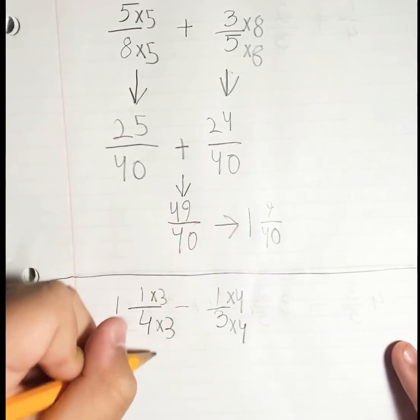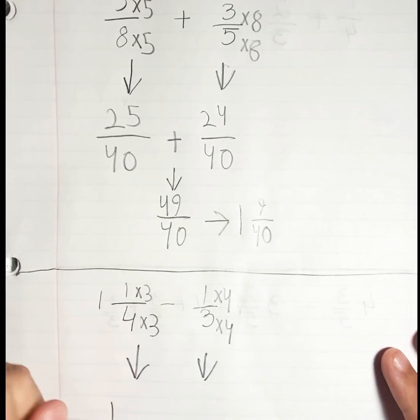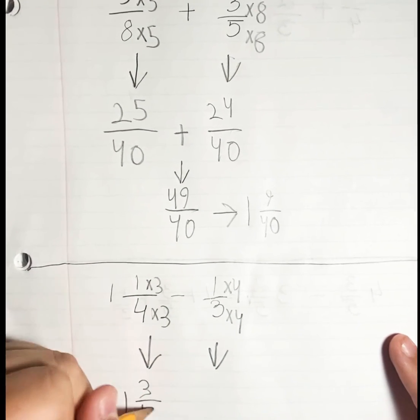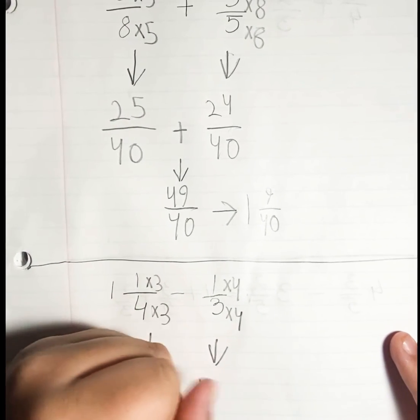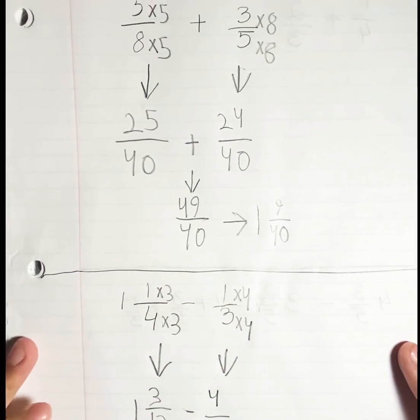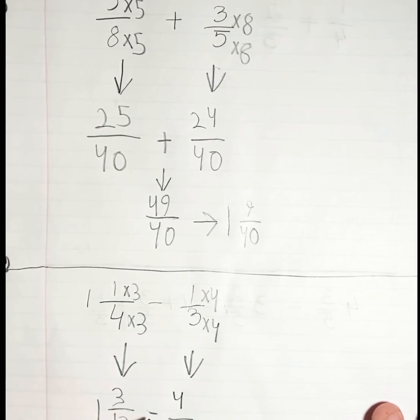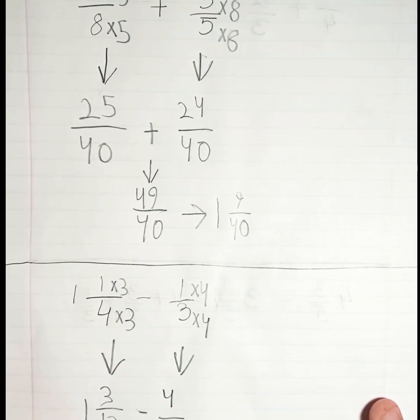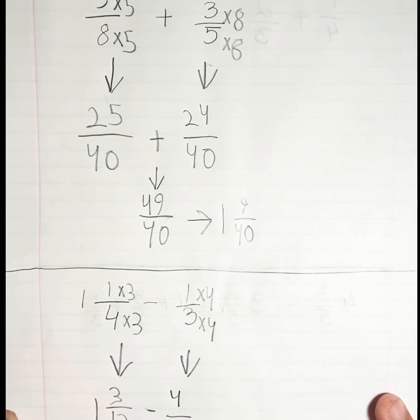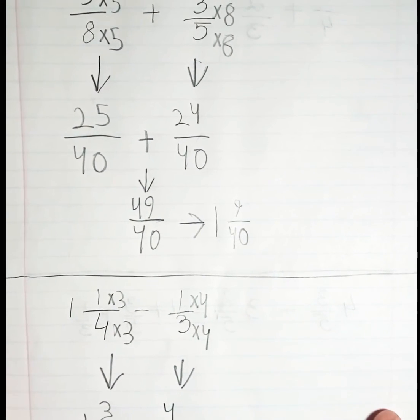Now bring these down. So we bring down the 1 and then 3/12 subtract 4/12. We can see that 3/12 is not enough to minus from 4/12, so we're gonna have to convert the 1 back to 12/12. So we have to bring them down again. So 12 plus 3 is 15, so we have 15/12 subtract 4/12.